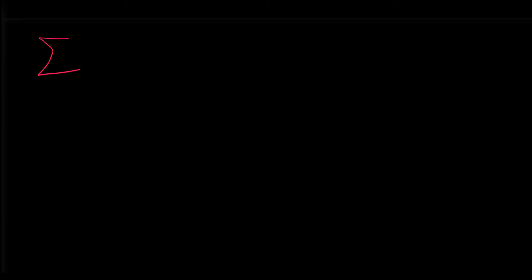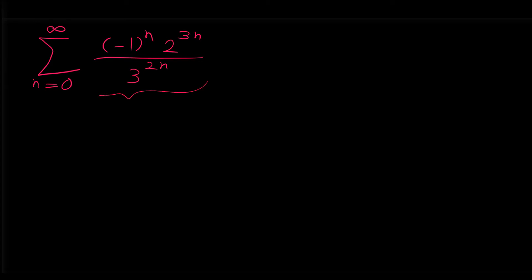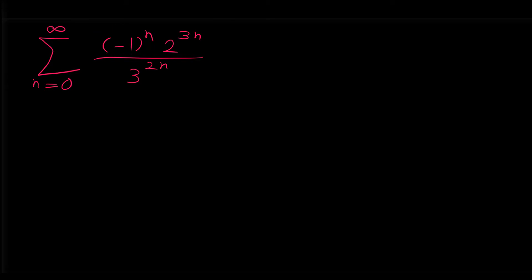Let's do another example: sigma n from 0 to infinity of negative 1 to the power of n times 2 to the power of 3n over 3 to the power of 2n. As you can see in the general term of this series, every expression is in the form of something to the n — negative 1 to the n, 2 to the 3n, 3 to the 2n. All the powers are in terms of n, so it's a good idea to use the root test for this series.